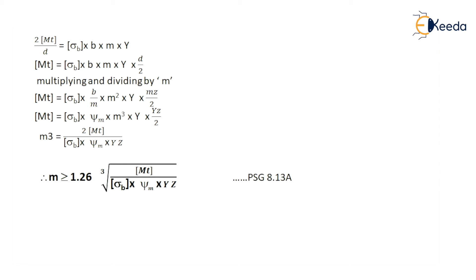MT is then written as sigma B into B into psi_M multiplied by M cubed into Y into Z by 2. Therefore, solving for M cubed: M cubed equals 2MT upon sigma B into psi_M into Y into Z. Solving this cubic equation gives M greater than or equal to 1.26 multiplied by the cube root of MT upon (sigma B into psi_M into Y into Z). This equation is given in PSG data book on page 8.13a and will be used for designing spur gears.